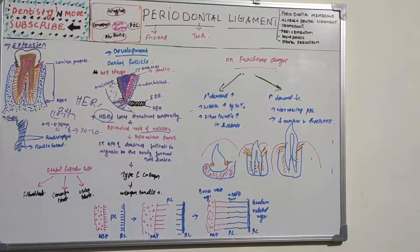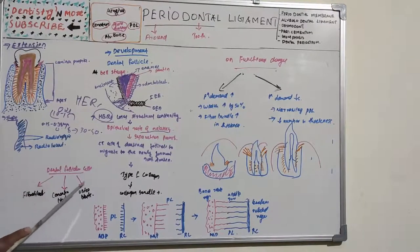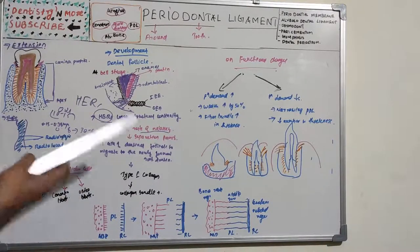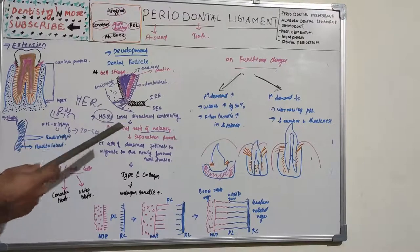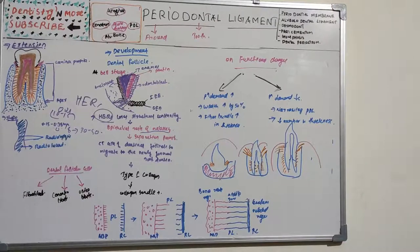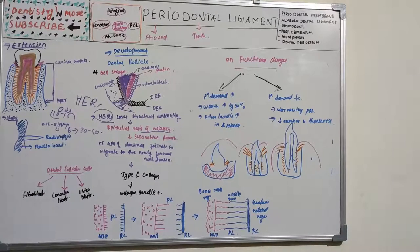The dental follicle produces fibroblasts, cementoblasts, and osteoblasts — forming collagen (the principal fiber of the periodontal ligament), cementum, and bone respectively. Ultimately, the dental follicle gives rise to the periodontal ligament, cementum, and alveolar bone. As root formation continues, cells in the perifollicular area actively synthesize collagen fibers, which assemble into bundles attached to both the bone and cemental surfaces.